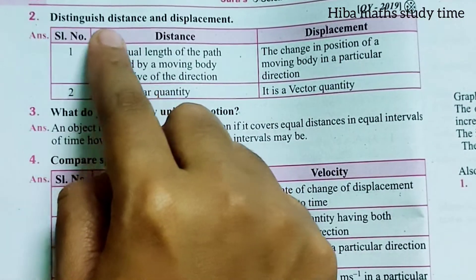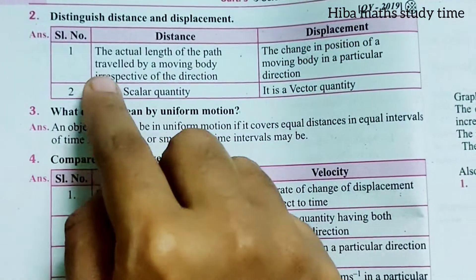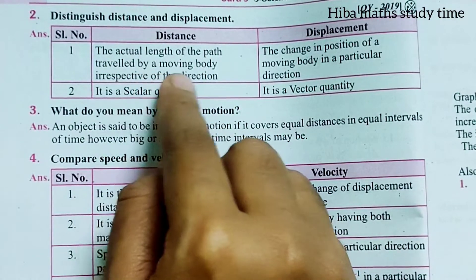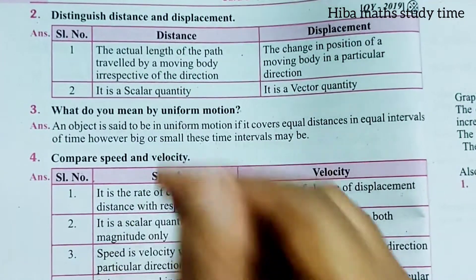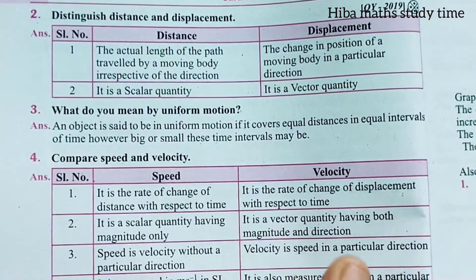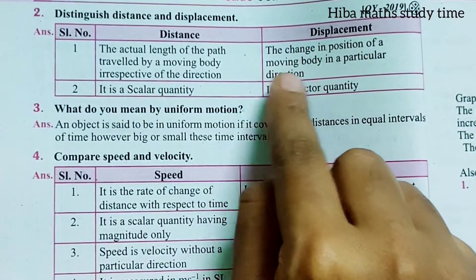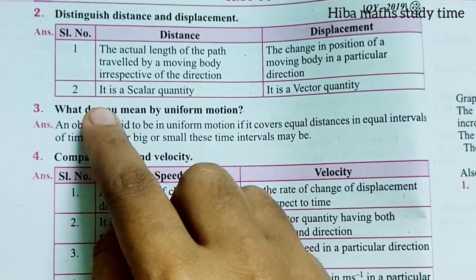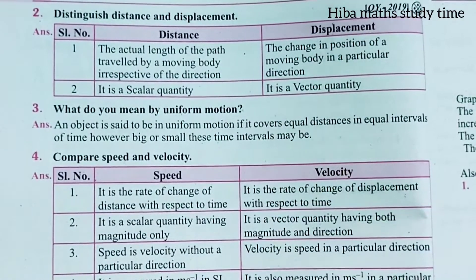Second question: Distinguish distance and displacement — two points. Distance is the actual length of the path traveled by a moving body, irrespective of the direction. Displacement is the change in the position of a moving body in a particular direction. Displacement is a vector quantity.